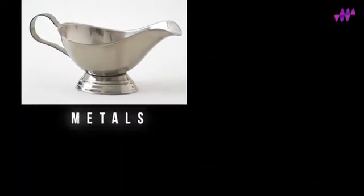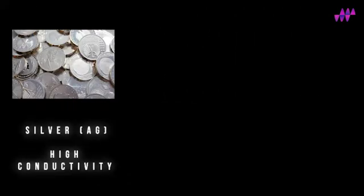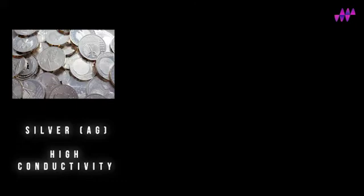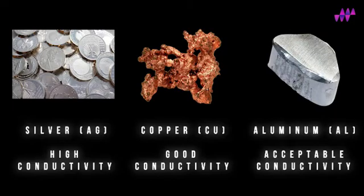However, in this video, we'll focus on metal conductors. Silver has a higher electrical conductivity. Copper has a high conductivity, though it's weaker than silver's. Aluminum has lower conductivity when compared to the previous metals.